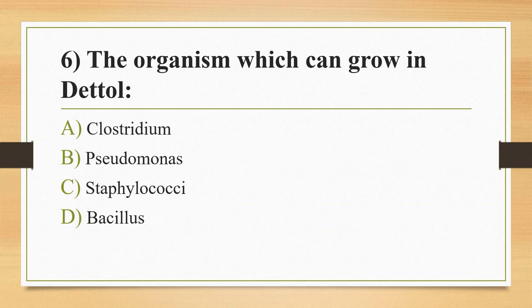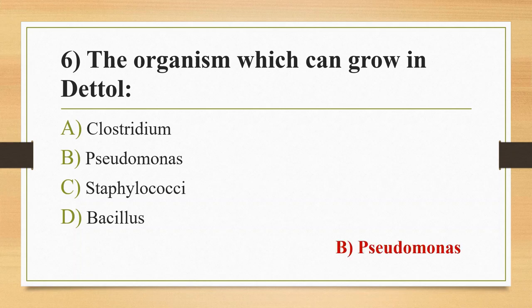Sixth question: Which organism can grow in Dettol? Option A, Clostridium; Option B, Pseudomonas; Option C, Staphylococcus; Option D, Bacillus. Pseudomonas is one of the leading causes of nosocomial infection. It has the ability to form biofilms that protect the bacteria and give resistance to both disinfectants and antibiotics, along with restricted outer membrane permeability, making it resistant to Dettol.